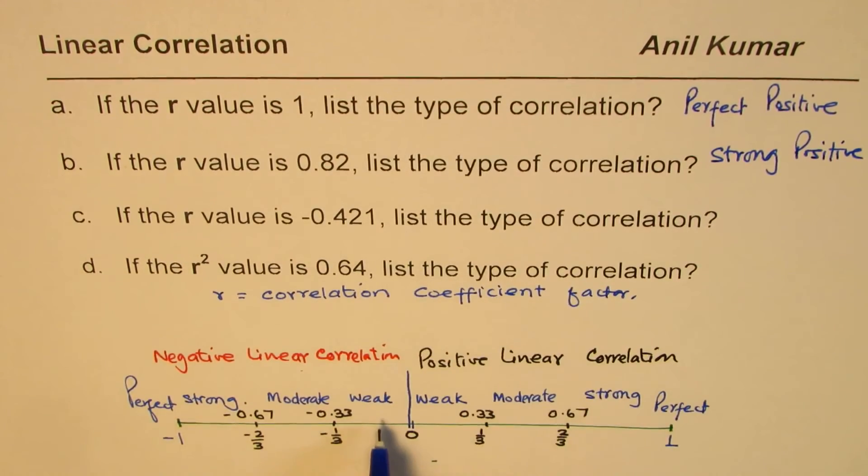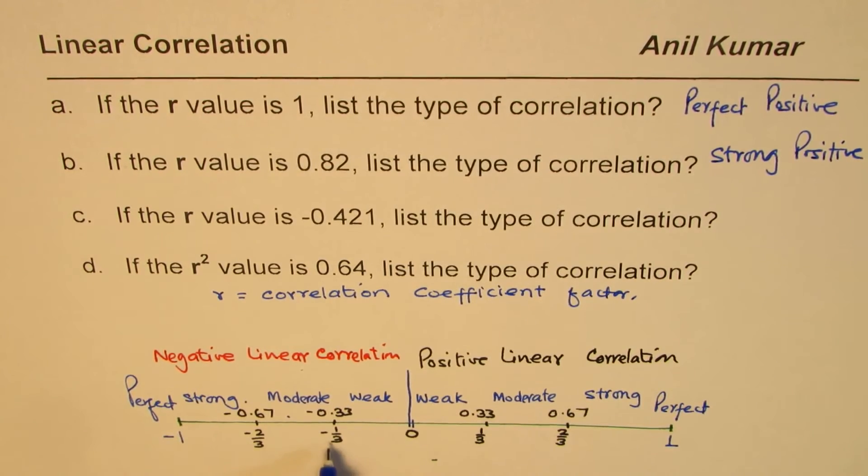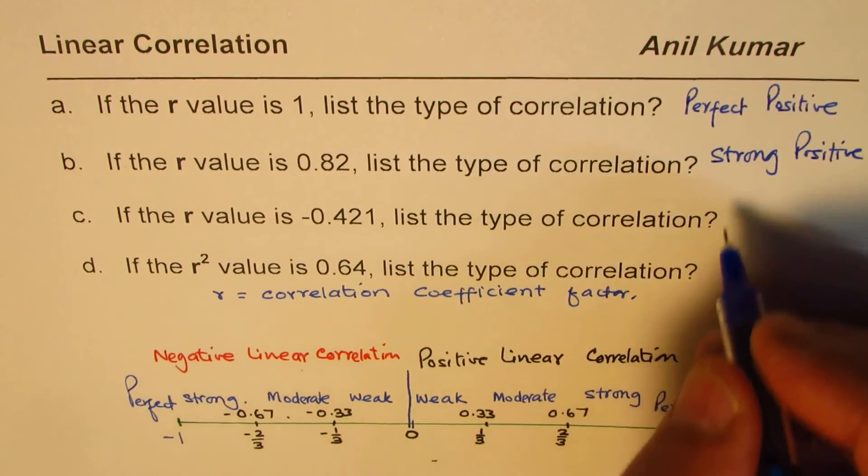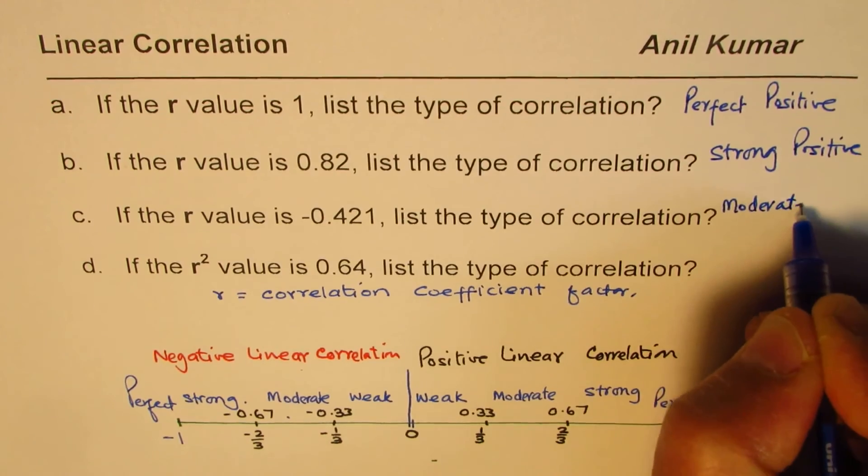If the r value is negative 0.421, that means it is between minus 1 over 3 to minus 2 over 3. It will be treated as moderate negative.